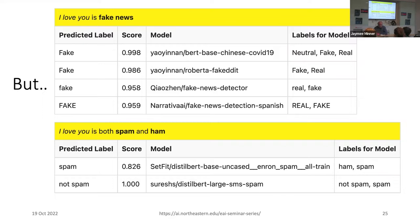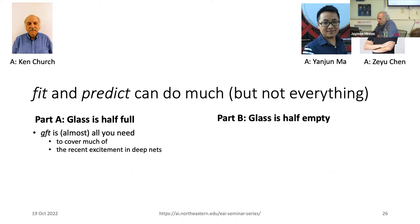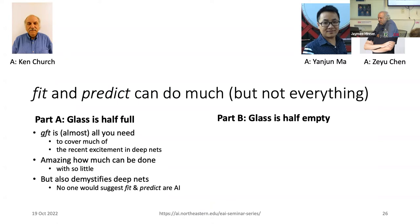The bad news is that almost all these models think 'I love you' is fake news, and there's a split decision about whether it's spam. One could complain that you shouldn't take a model trained on Spanish and give it English, and it's probably even worse to give it to a model trained on Chinese — but people do this kind of thing. This makes it very easy to do the wrong thing. So, Part A is the glass half full: it makes it super easy to do much of what's in the literature. You really don't need to program anything. It's amazing how much can be done with so little, and I think this also demystifies AI — nobody would say that regression or classification is AI.